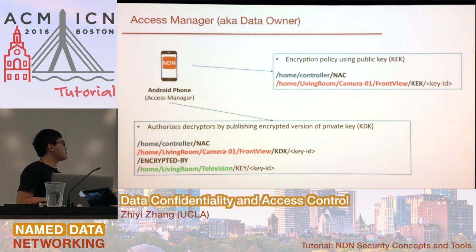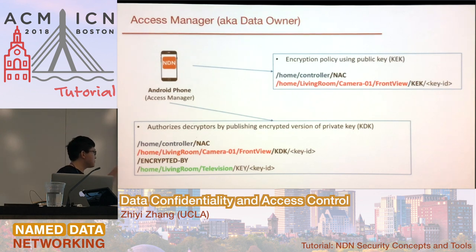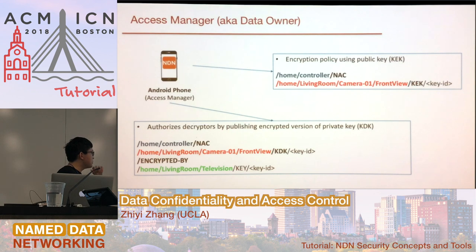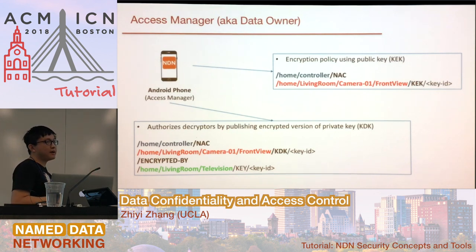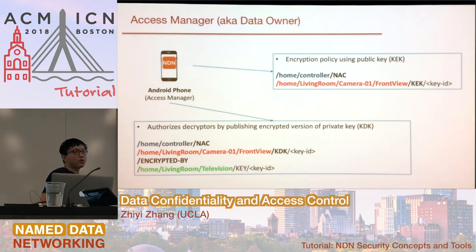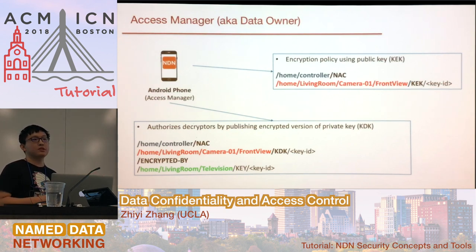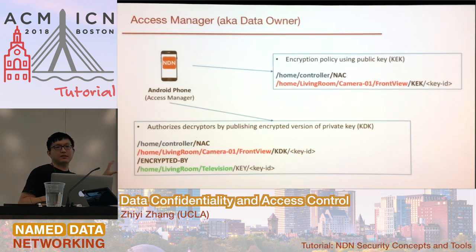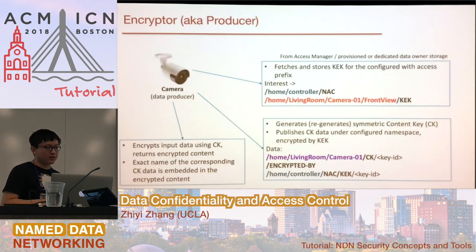For the decryption key, it is encrypted by the decryptor's identity public key. The blue part is still the manager's prefix, the red part is the dataset being controlled, and there is a special component called 'encrypted-by'. This indicates that the decryption key is for the green party — the decryptor. The decryptor can learn from this name which identity public key was used to encrypt the decryption key.